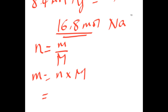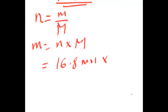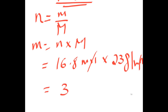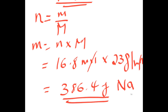So 8.4 moles of magnesium gives 16.8 moles of sodium. Mass equals moles times molar mass of sodium, which is 23 grams per mole, so 386.4 grams of sodium will be produced.